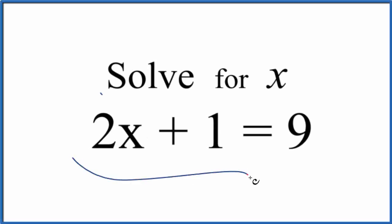So we have 2x plus 1 equals 9, and we want to solve for x. So we want to know what number that we put in for x here. 2 times that number plus 1 will equal 9.